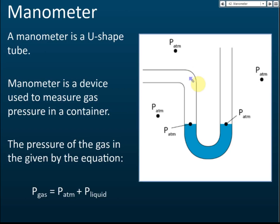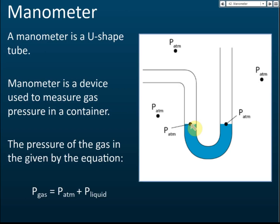The second thing to know is that the pressure on the surface of a liquid equals the pressure of the gas that the surface is exposed to. For example, if the surface is exposed to the atmosphere, then the pressure on that surface is the atmospheric pressure. If exposed to hydrogen gas, then the pressure on the surface is the pressure of the hydrogen gas, and so on.